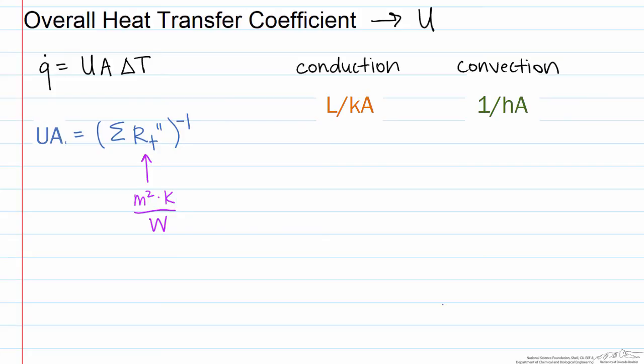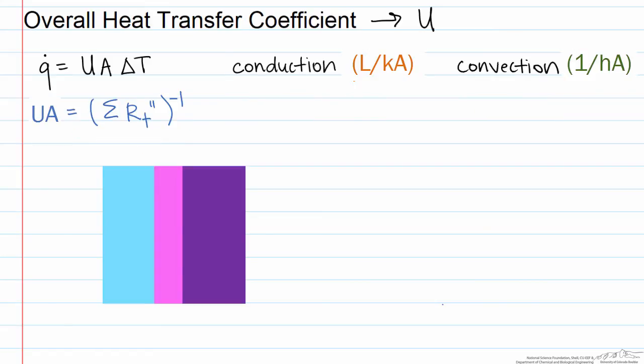So let's look at an example of a composite wall. So here we have a plane wall made of three different materials. And we have convection on the outside, so we have a convective heat transfer coefficient. And for the first material, we have our thermal conductivity and the length the heat transfer goes through. And each one of these will have a different thermal conductivity and length. And finally, at the end of the wall, we have convection, so we have another convective heat transfer coefficient.